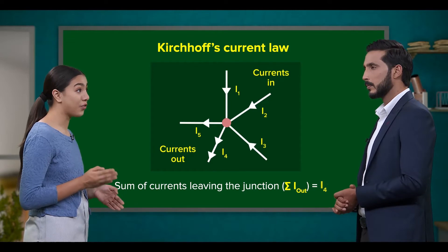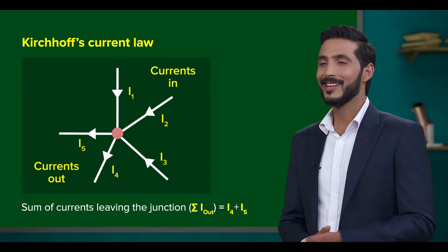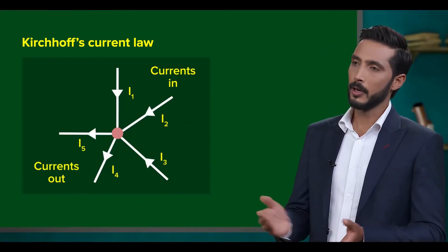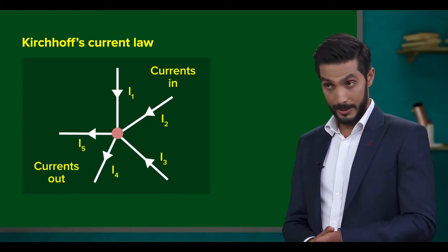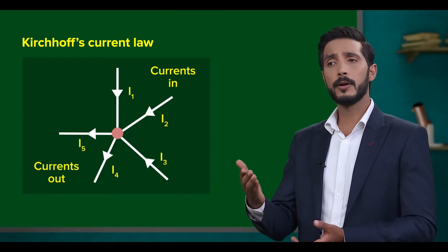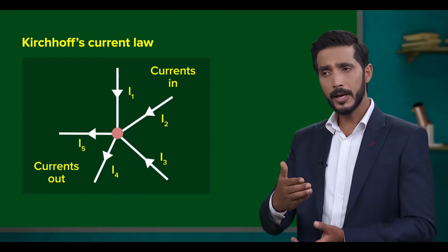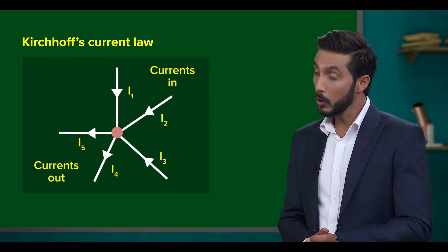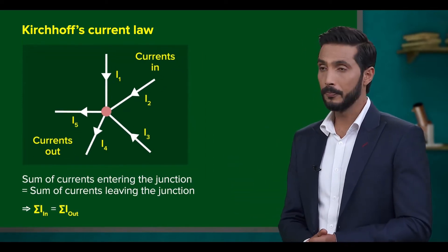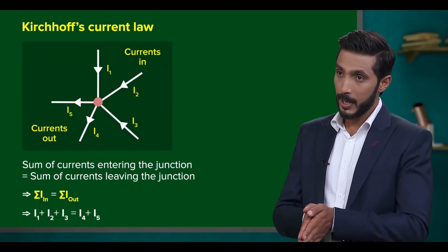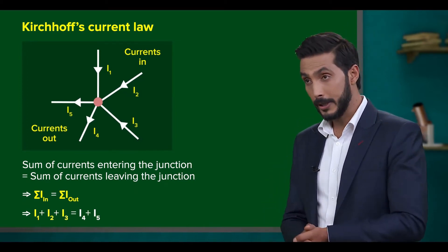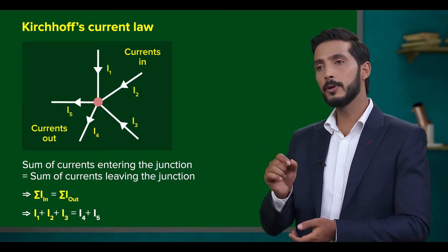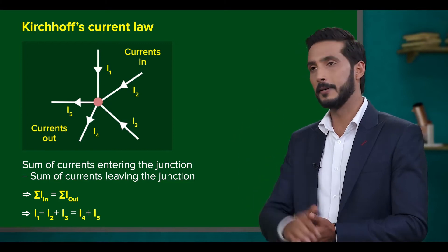Similarly, the sum of currents leaving the same junction should be I4 plus I5. So what Kirchhoff's current law says is that both the currents entering and leaving a junction should always be equal — therefore, I1 plus I2 plus I3 should be equal to I4 plus I5.